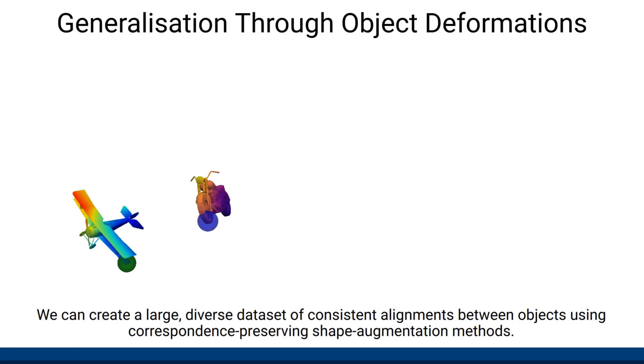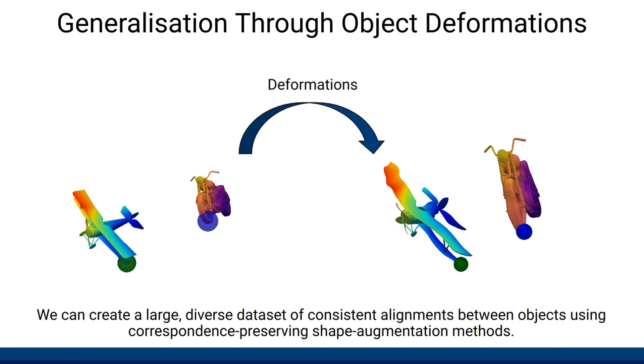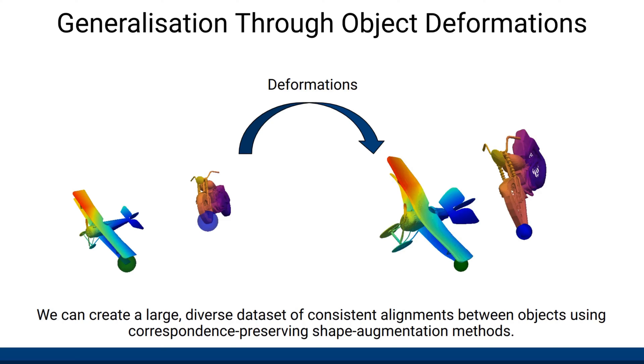To learn a model capable of aligning any objects without any prior knowledge about them, we need a large and diverse dataset of object alignments. We create such a dataset in simulation using object models from ShapeNet and a shape augmentation method which allows us to create an arbitrary number of objects from the same category while also ensuring that newly created instances of those objects are aligned in a consistent way.